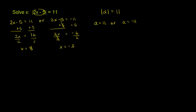Let's verify it. So if x is equal to 8, let's show that it satisfies this equation. So we'd get the absolute value of 2 times 8 minus 5 should be equal to 11. 2 times 8 is 16, minus 5 is 11. So we have the absolute value of 11 should be equal to 11. And we know that's true — the absolute value of 11 is 11. So it all works out.